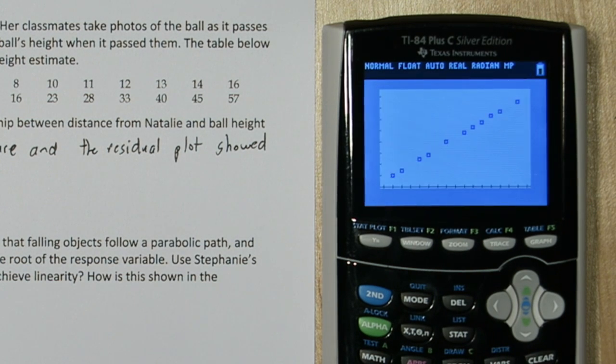If I press zoom in 9, that looks pretty linear, but I want to check a residual plot just in case.